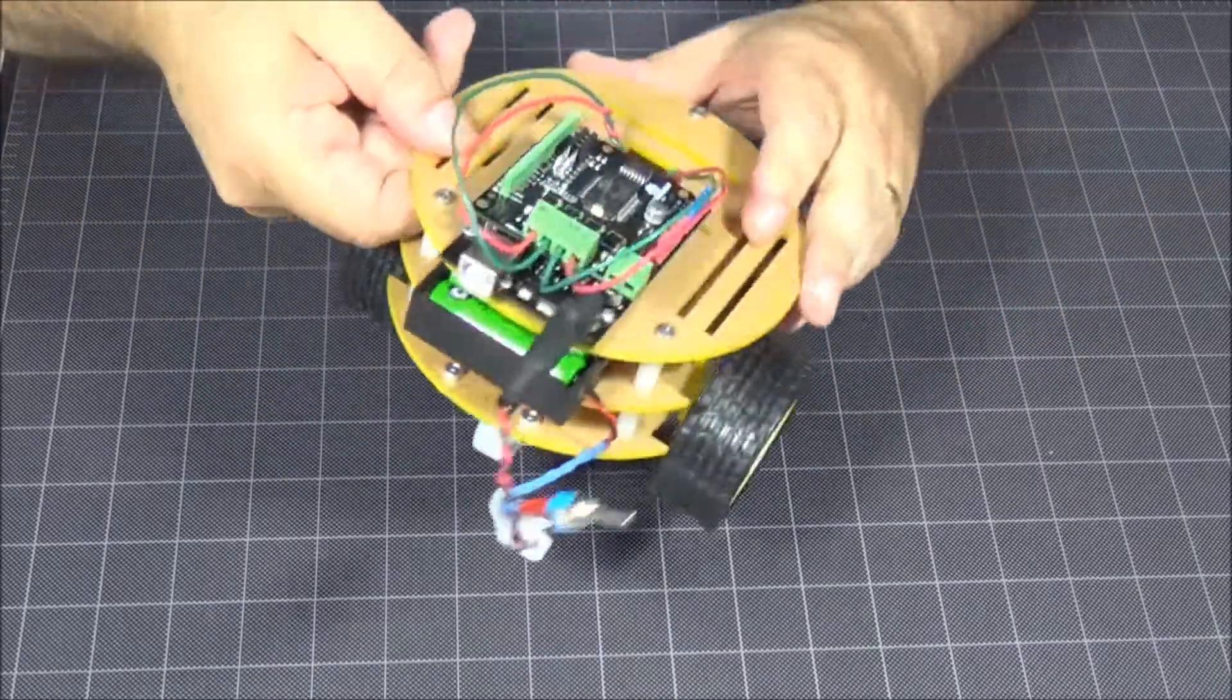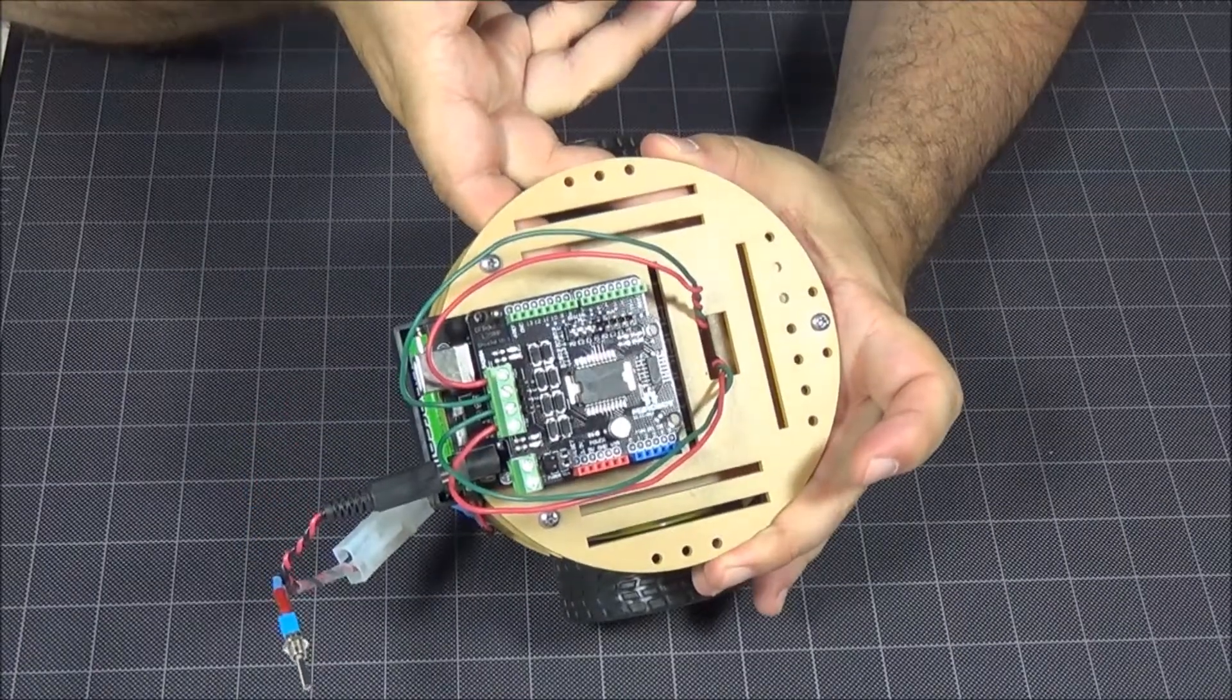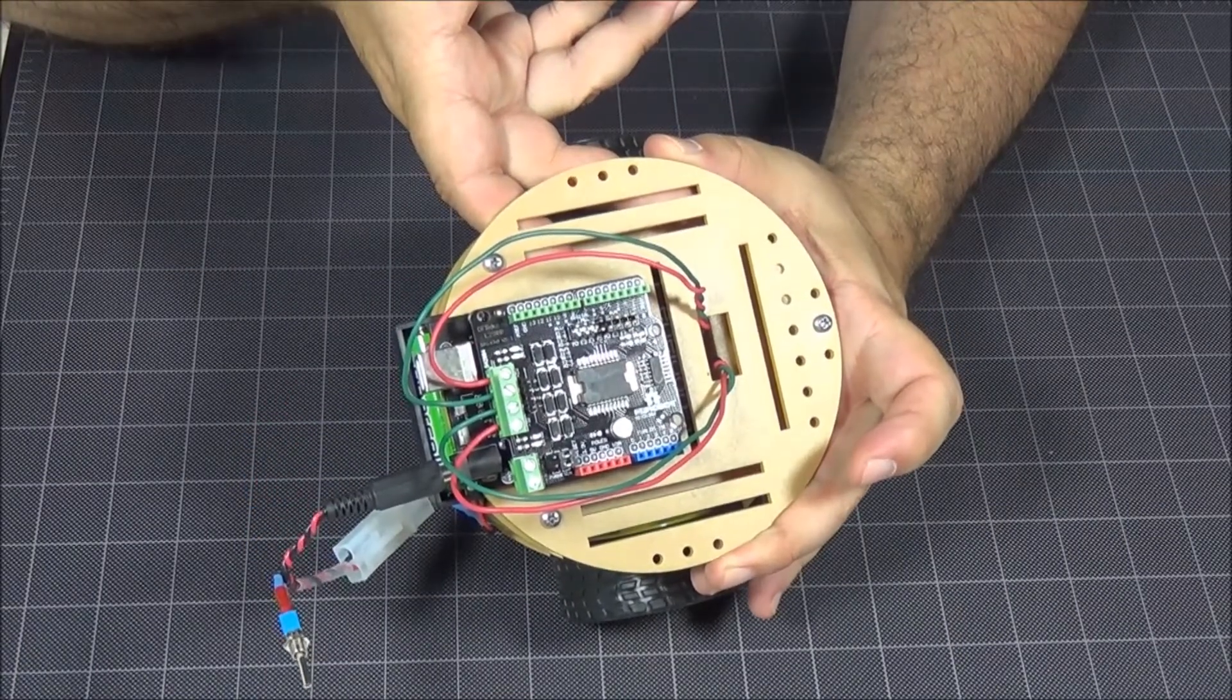And there you have it. It's a DFRobot 2 Amp Motor Driver Shield.